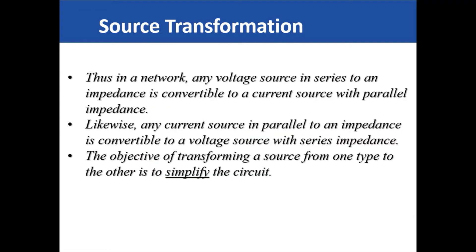Therefore, we can say that in a network, a voltage source that is in series with an impedance can be converted into a current source that is in parallel with an impedance. And the reverse is true: a current source that is in parallel with an impedance can also be converted into a voltage source that is in series with an impedance.